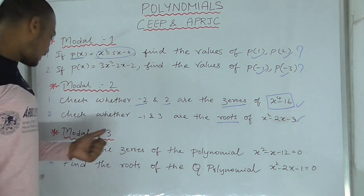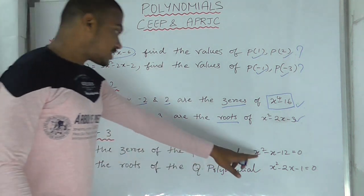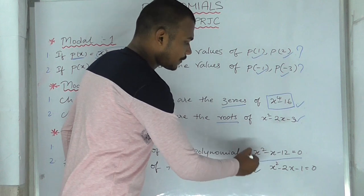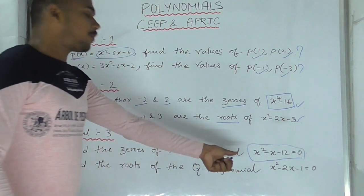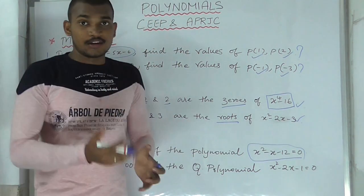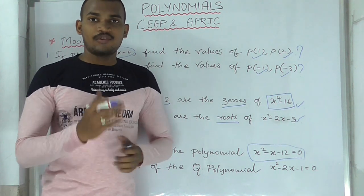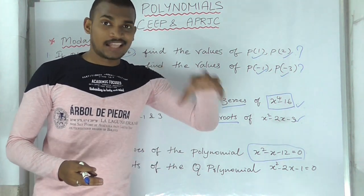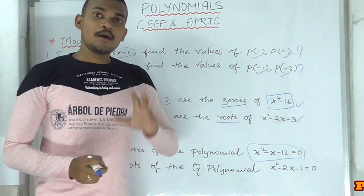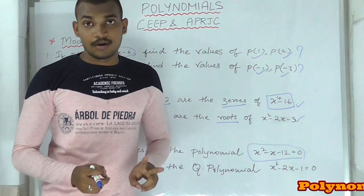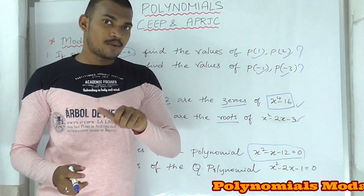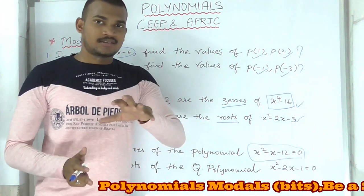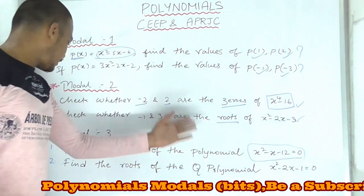This is the second model. Next, model 3: find the zeros of the polynomial x squared minus x minus 12 equals 0. For a quadratic polynomial, we find zeros. We have methods — 4 methods, but in 10th grade we use the basic methods. One is: x equals minus b plus or minus root over b squared minus 4ac, divided by 2a. That's the formula, and that's factorization — you can do it easily.